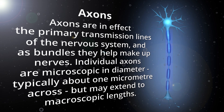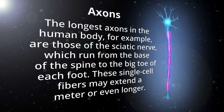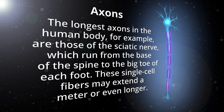Axons. Axons are in effect the primary transmission lines of the nervous system, and as bundles they help make up nerves. Individual axons are microscopic in diameter, typically about 1 micrometer across, but may extend to macroscopic lengths. The longest axons in the human body, for example, are those of the sciatic nerve, which run from the base of the spine to the big toe of each foot. These single cell fibers may extend a meter or even longer.